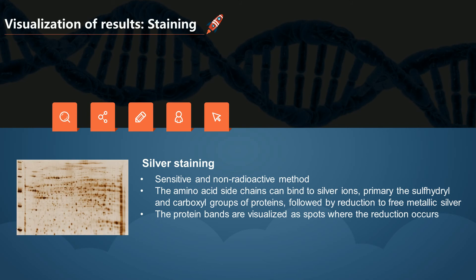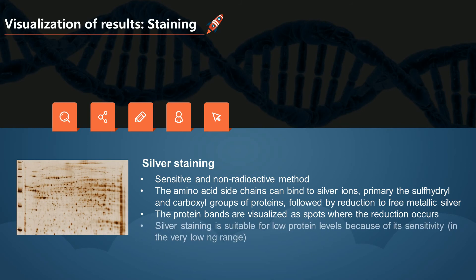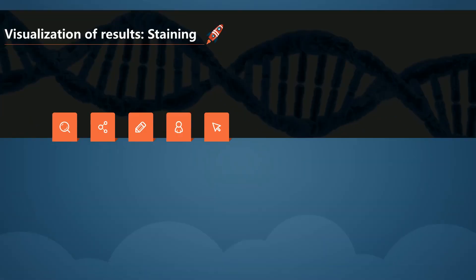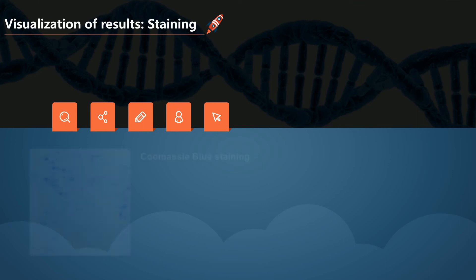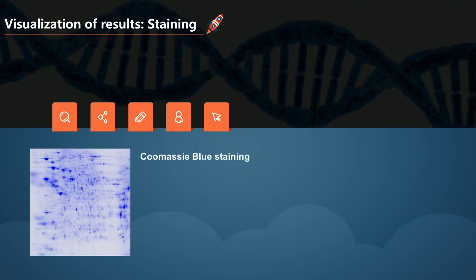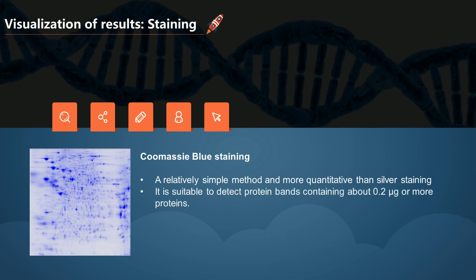Coomassie blue staining is a relatively simple method and more quantitative than silver staining. It is suitable to detect protein bands containing more proteins. The Coomassie dye binds to proteins to form a protein-dye complex through van der Waals attractions. There are two kinds of Coomassie dyes.